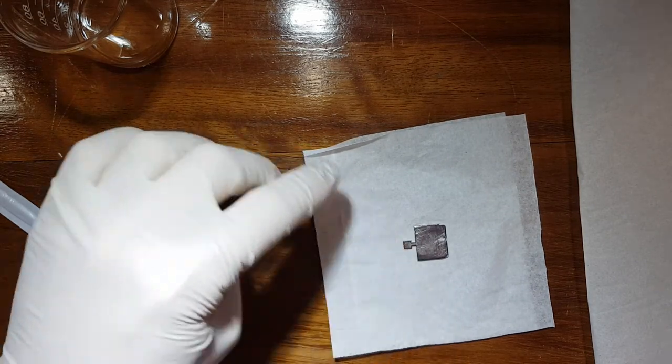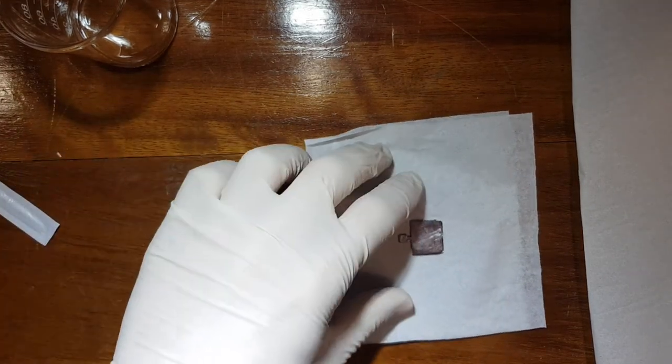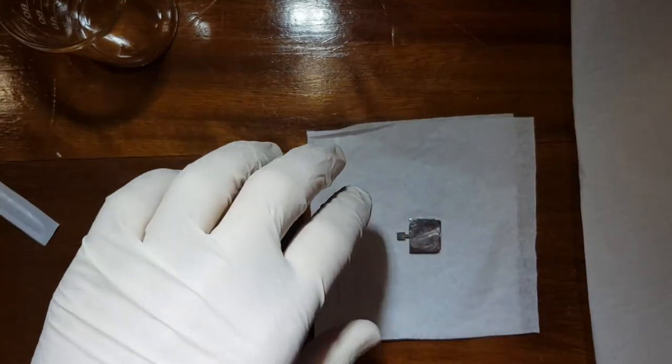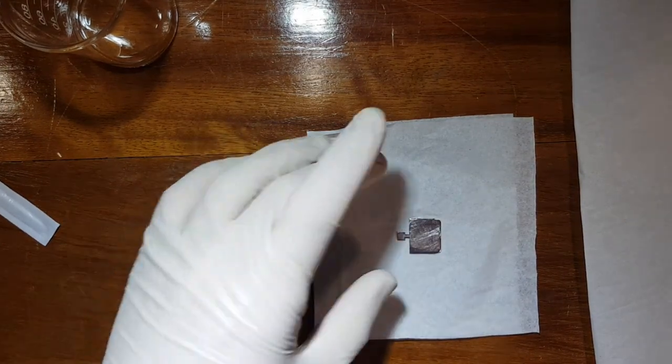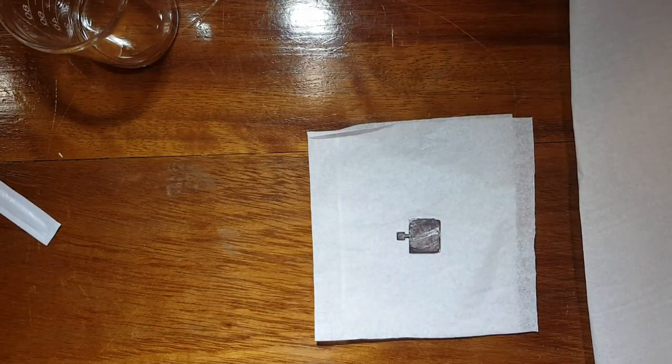You'll see that the moment you put it on the kim wipe, the kim wipe will actually go wet from the acetone. But as you blow it, it evaporates and the kim wipe looks dry again. By then you know it should be good to go into the sample storage. And that's it, it's really that simple.